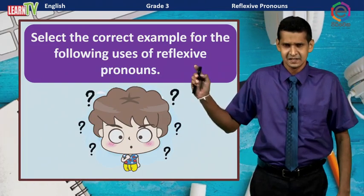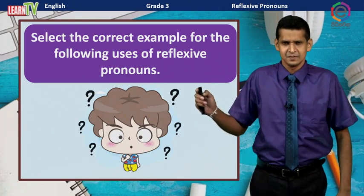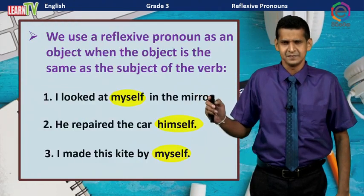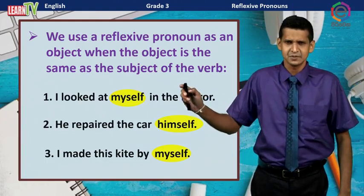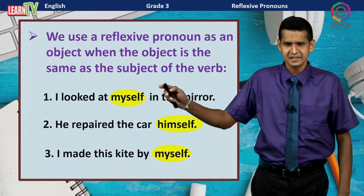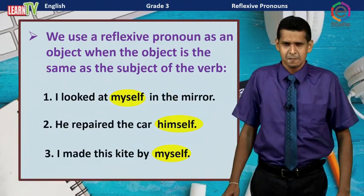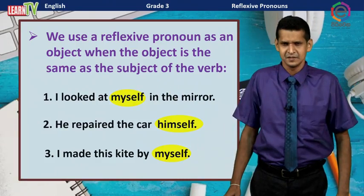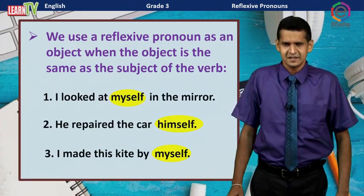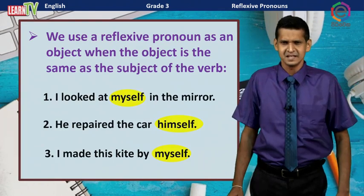In the first lesson, we discussed them. We use a reflexive pronoun as an object when the object is the same as the subject of the verb. For example: I looked at myself in the mirror.